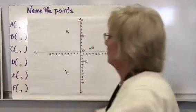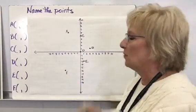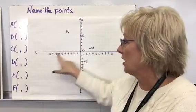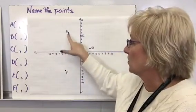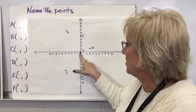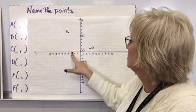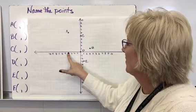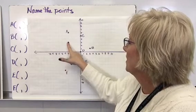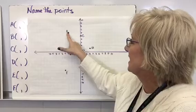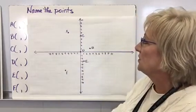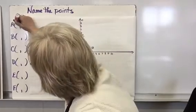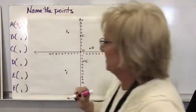Alright, now we're going to name some points. They already have the points labeled with letters. Remember, we go on the x-axis first. Starting with A — I go four units in a negative direction and six units up in a positive direction. So A would be (-4, 6).